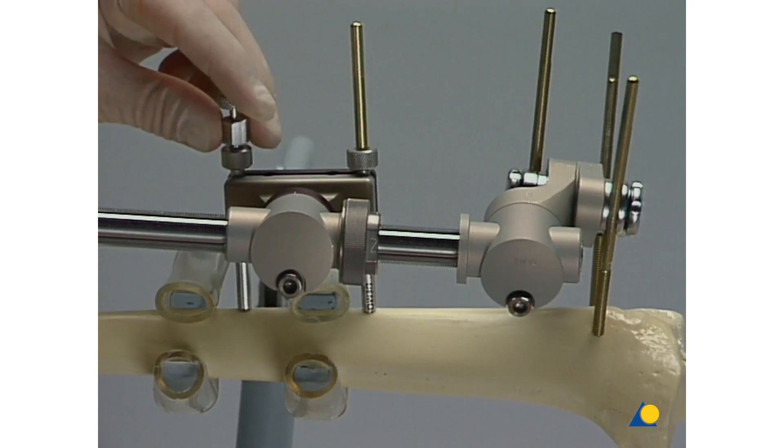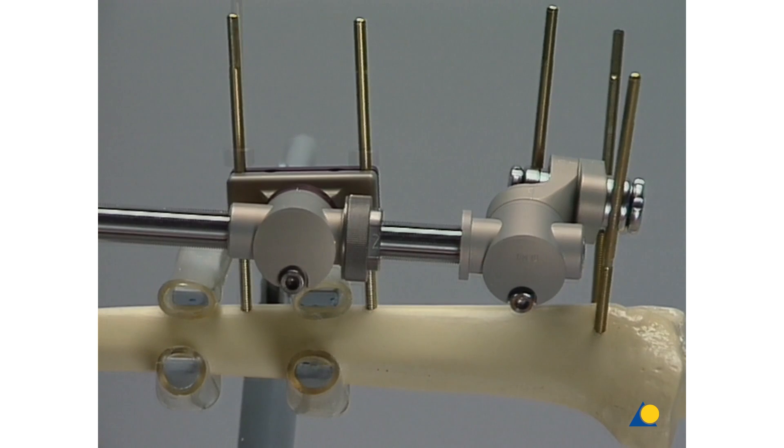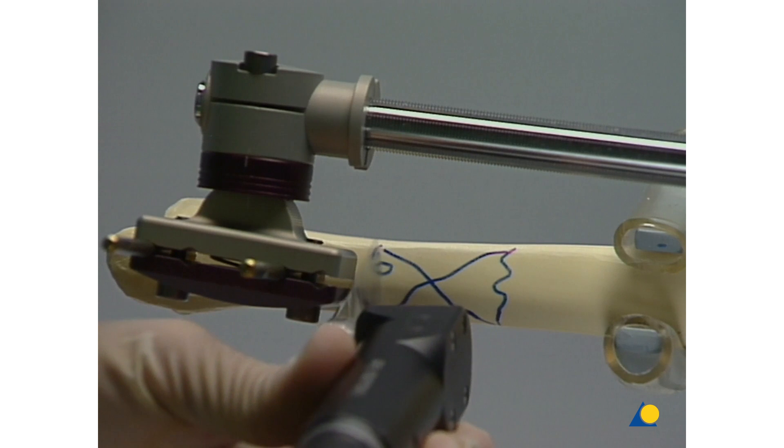Two shunt screws are now inserted through the standard clamp into the middle section of the shaft. This middle section will later serve as the transporting component. The distal shaft is now resected.